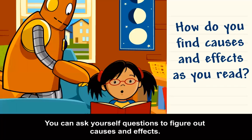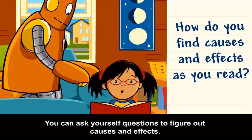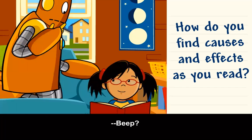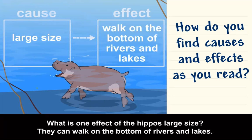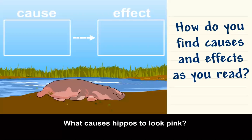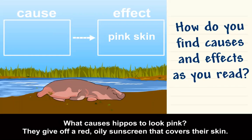You can ask yourself questions to figure out causes and effects. What is one effect of the hippos' large size? They can walk on the bottom of rivers and lakes. What causes hippos to look pink? They give off a red, oily sunscreen that covers their skin.